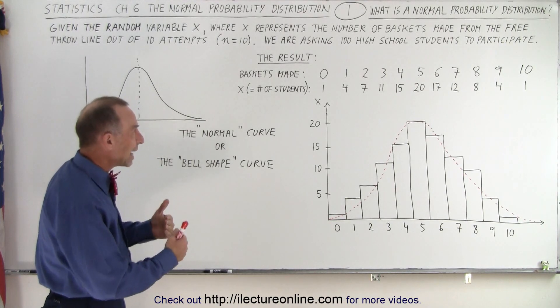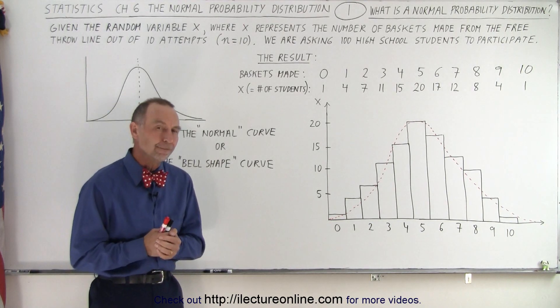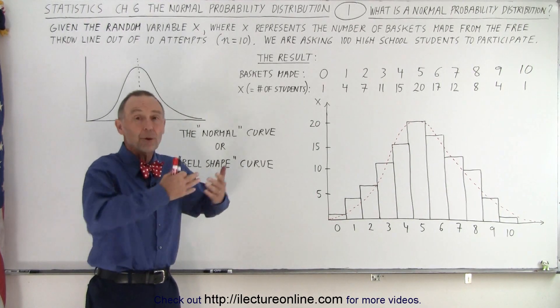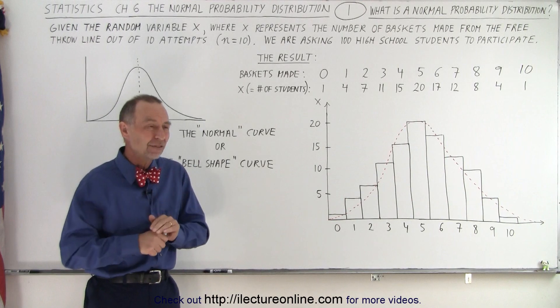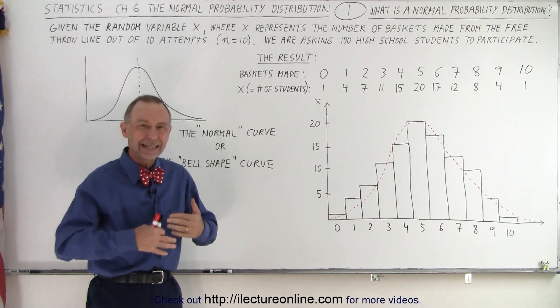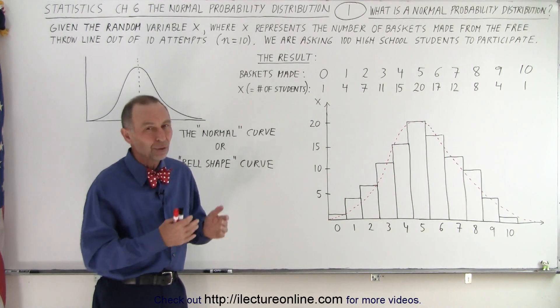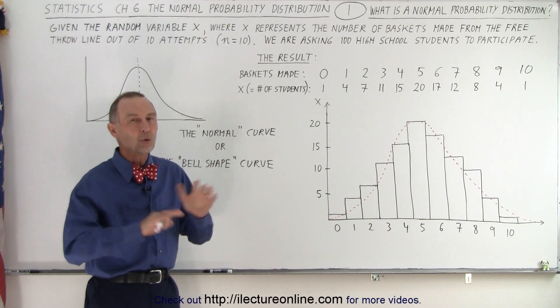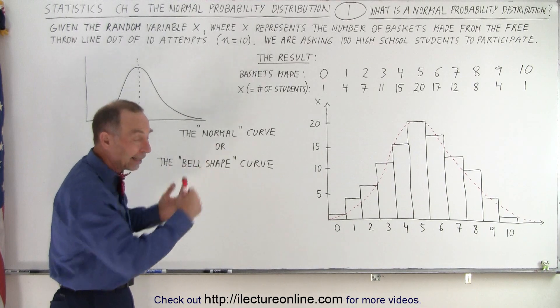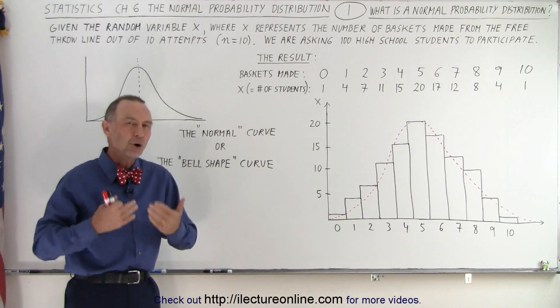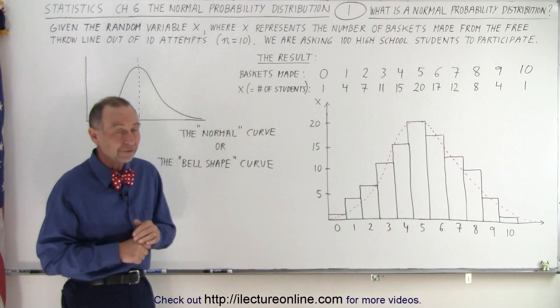So that's what we mean by a normal probability distribution. So you may ask, what's so important about that? Well, it is applied to many, many different aspects of science, industry, you name it. We use this all the time for all kinds of different reasons. And so therefore, it's important that we get used to seeing that, understanding what it is, and know how to utilize it to our benefit.